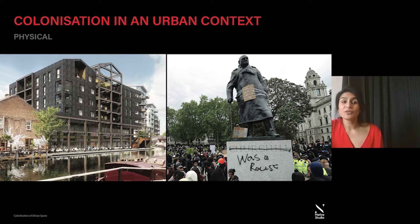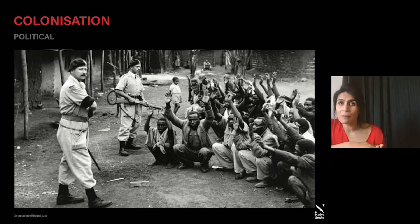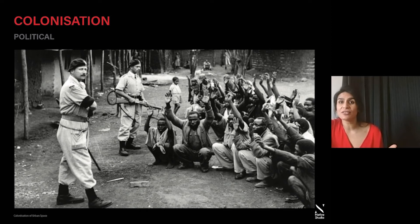Politically, the governance of the colonisers ensured submission from local people and adherence to their method of ruling, removing empowerment and any ability to dictate their native environment. Colonisers successfully pitched groups against each other to ensure divisions, allowing them to divide and rule. In an urban context, the political decisions of councils and governments dictate who lives where, who loses their homes, who is displaced, and how communities might be broken and segregated.